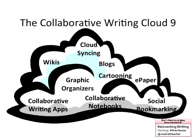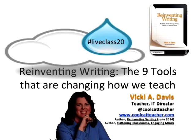As I sat down to write my current book that's just come out called Reinventing Writing — it will be out in print in the next seven to ten days — I found nine different categories of collaborative writing. Taking all the different ways that we write in my classroom and dividing them out, we've got wikis, cloud syncing, blogs, cartooning and infographics, e-paper, social bookmarking, collaborative notebooks and note-taking, graphic organizers, and collaborative writing apps.